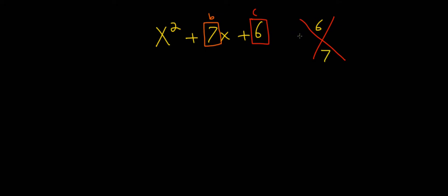And now what we do is we look for two different numbers that when multiplied yield 6, and when added yield 7. So in this case, those two numbers are going to be 6 and 1. So 6 times 1 is 6, and 6 plus 1 is 7.